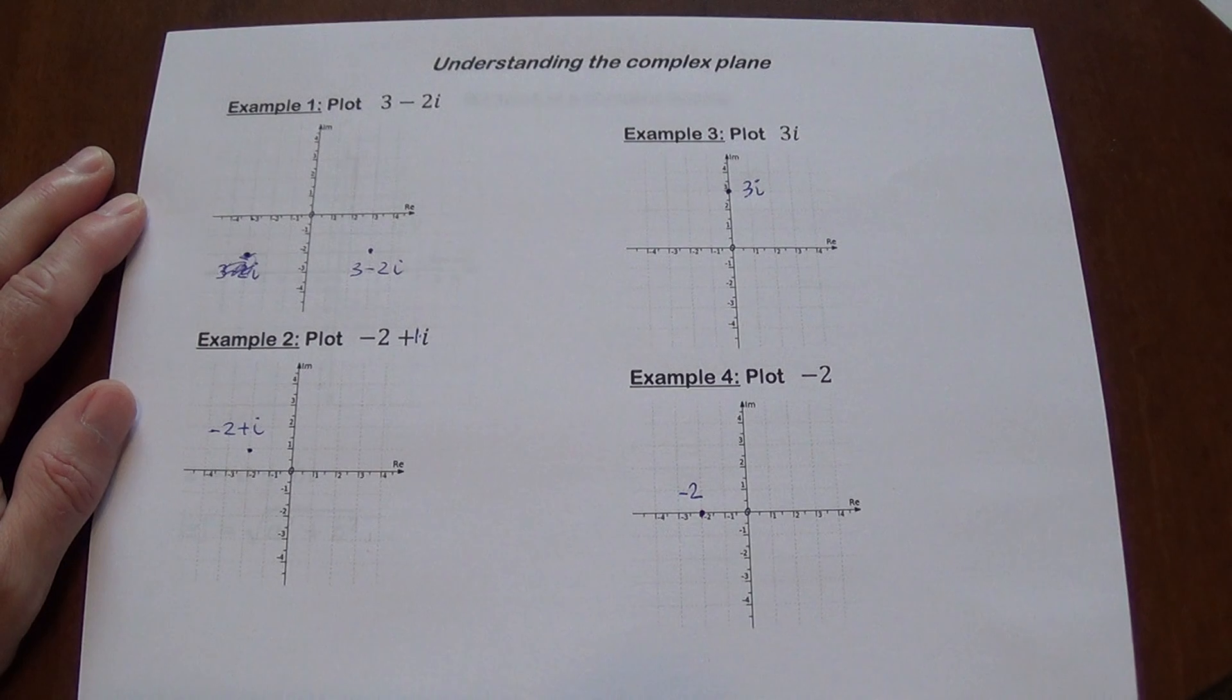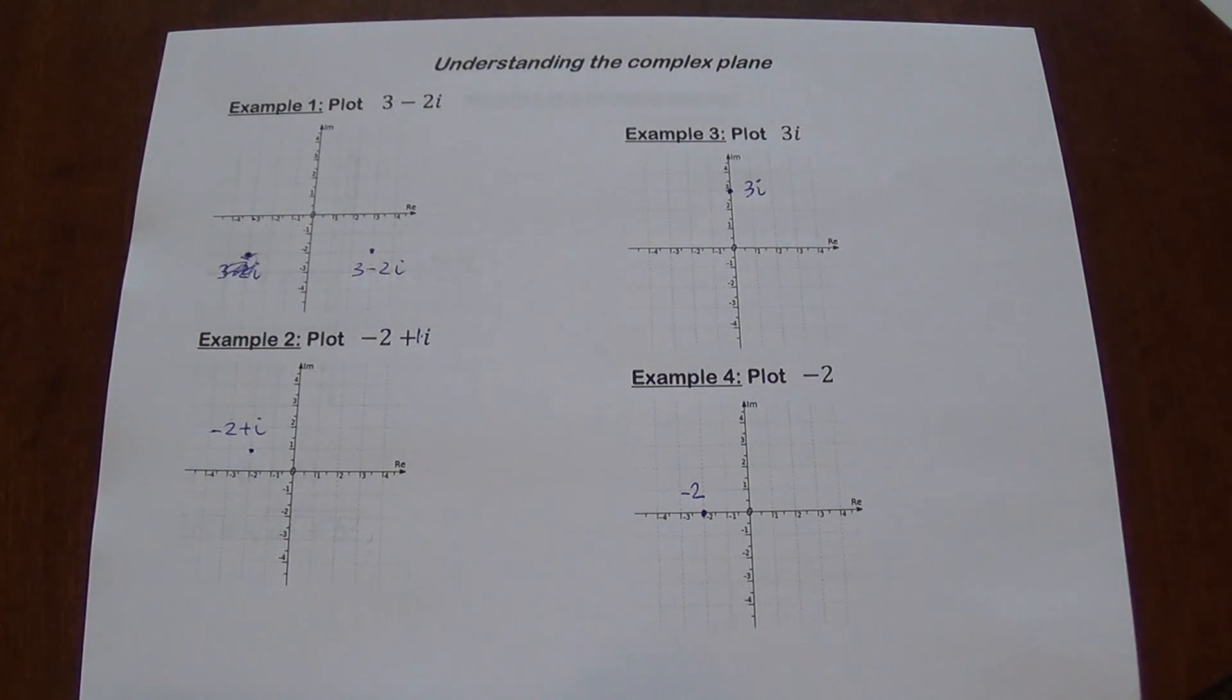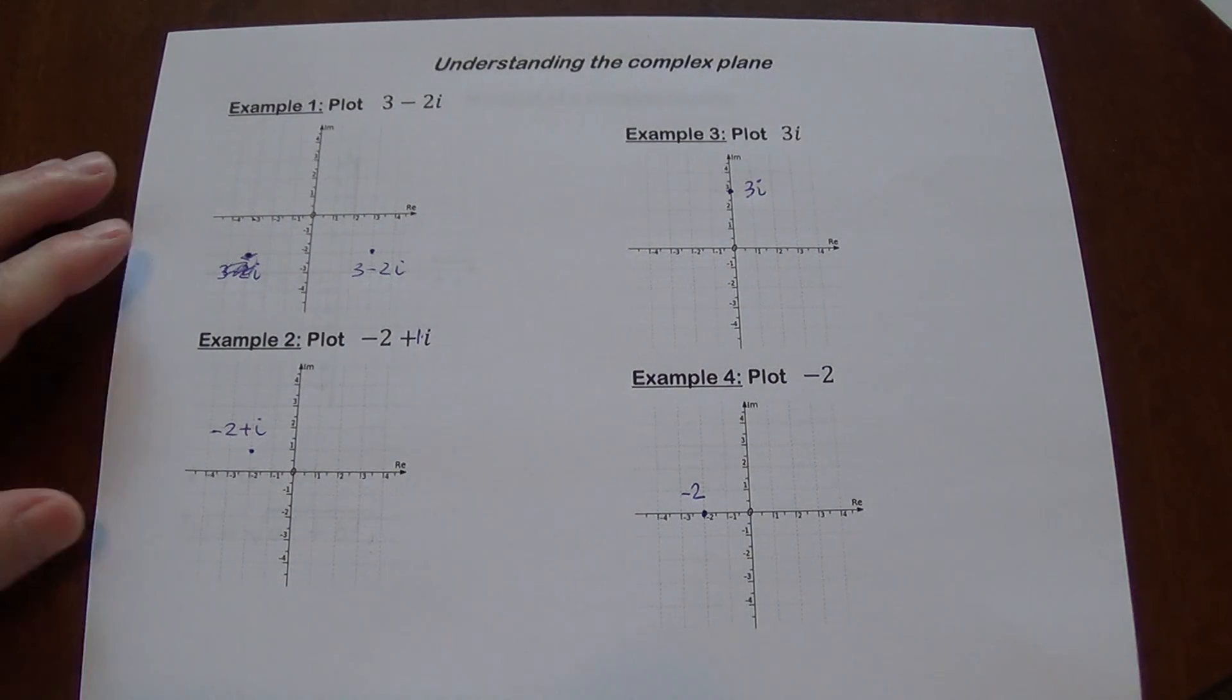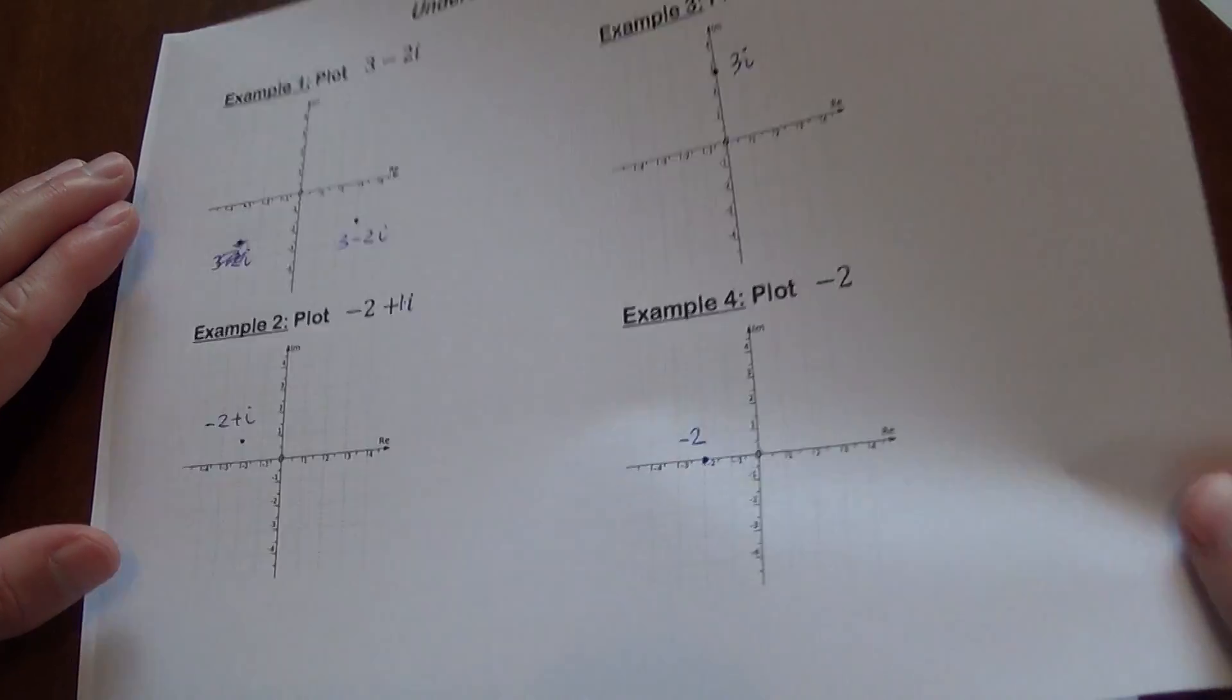So if the number is a pure real number, it's going to end up being on the horizontal axis, which is pretty much what the real number line is going to be. All right, we've got to talk about one more thing here.